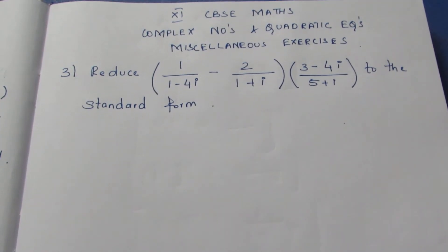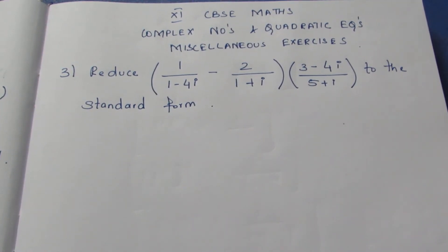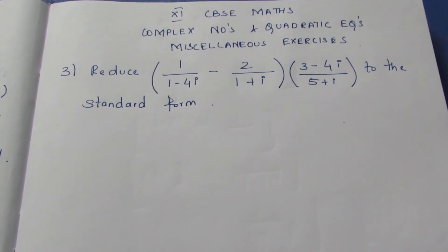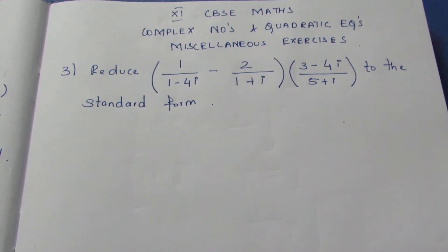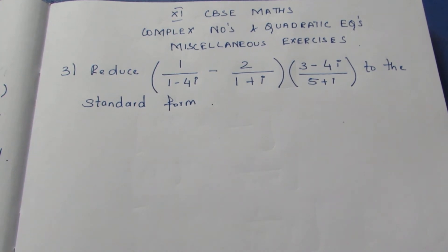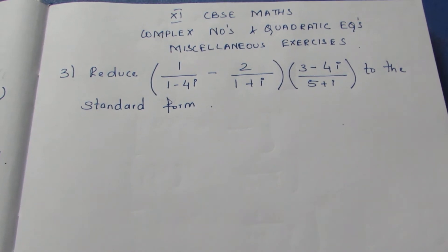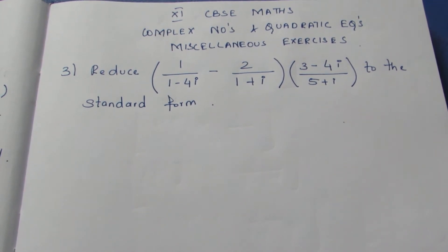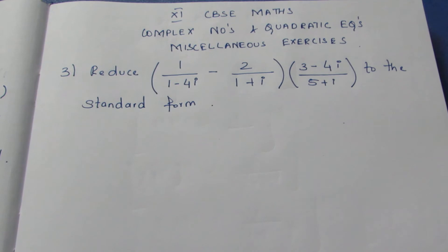Hello viewers, I am Mike Lee. Today we are going to do CBSE Class 11 complex numbers and quadratic equation miscellaneous exercise question number 3. We need to reduce 1/(1−4i) − 2/(1−i) × (3−4i)/(5+i) to standard form. Standard form means a real part and an imaginary part in complex numbers. So we are going to reduce, that is, we are going to solve it.